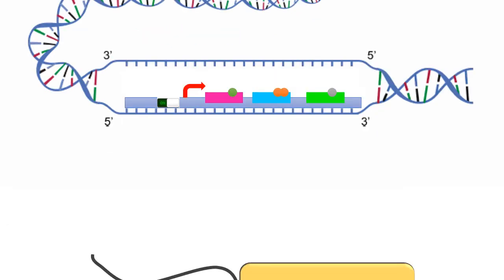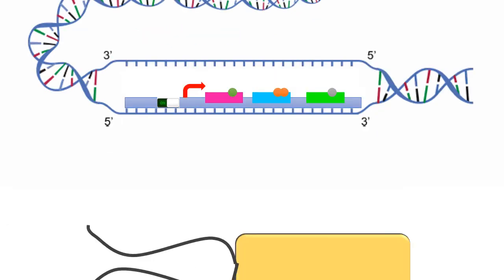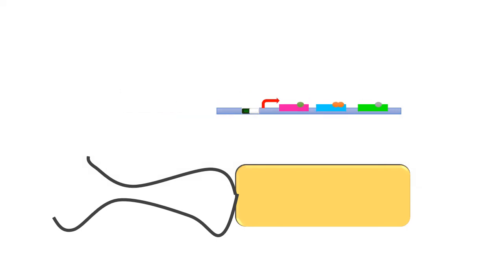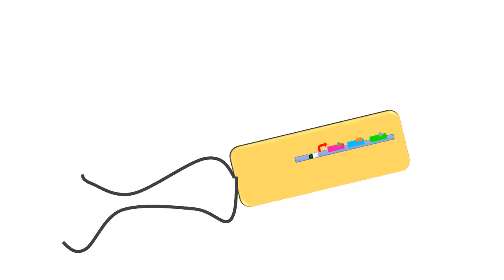This customized genetic switch can then be inserted into a chassis organism such as E. coli, creating cell factories. A cell factory can be defined as an organism that has been utilized to produce foreign proteins that it would not normally make.